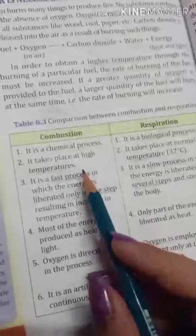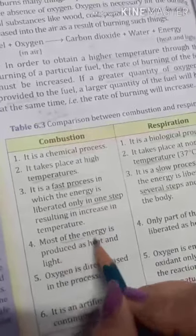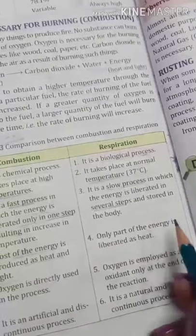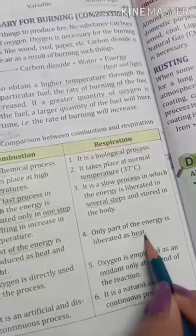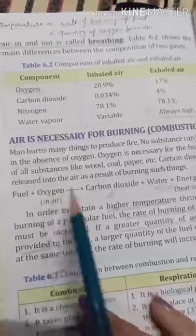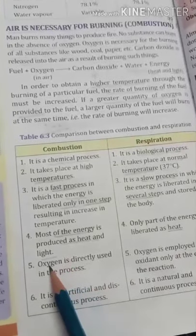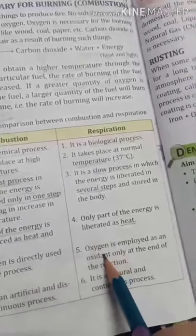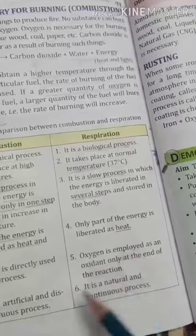In combustion, most of the energy is produced as heat and light — as we saw: fuel plus oxygen gives energy in the form of heat and light. But in respiration, energy is produced only in the form of heat. Next, in combustion, oxygen is directly used, because without oxygen combustion is not possible. In respiration, oxygen is not directly used but is required at a later stage of the reaction.